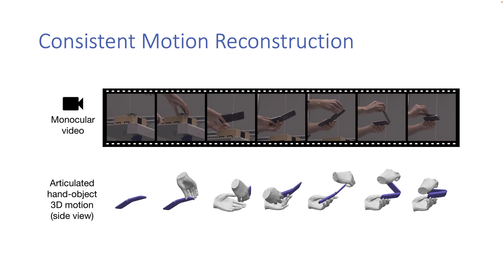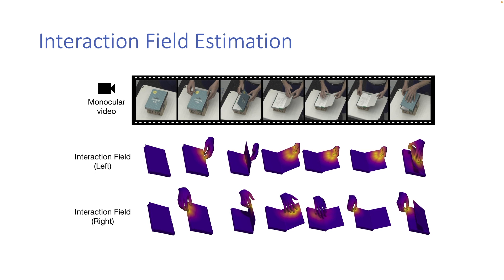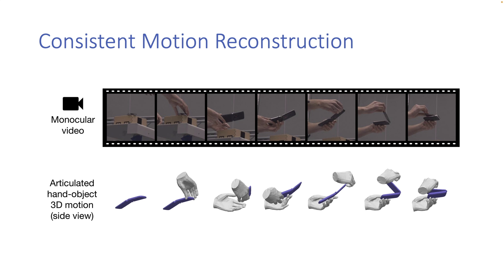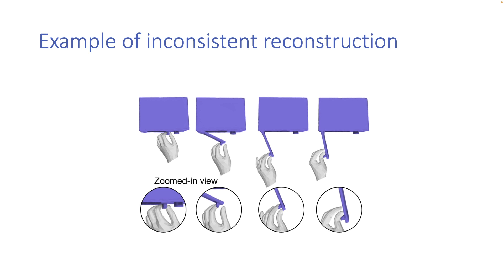We establish baselines for two novel tasks: consistent motion reconstruction and interaction field estimation. For the reconstruction task, our goal is to take colored images from a video and reconstruct both hands and the articulated object for every frame. We require the reconstructed meshes to have temporally consistent contact and motion. Consistent contact means the predicted hand should touch the same object region within a temporal window. Consistent motion means that hand object vertices in contact should move in the same direction within the temporal window.